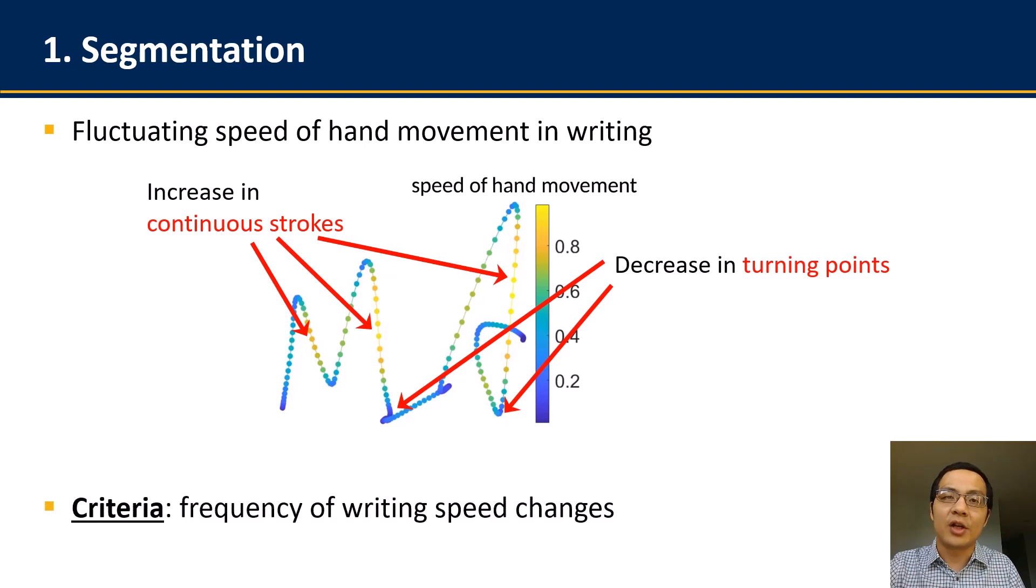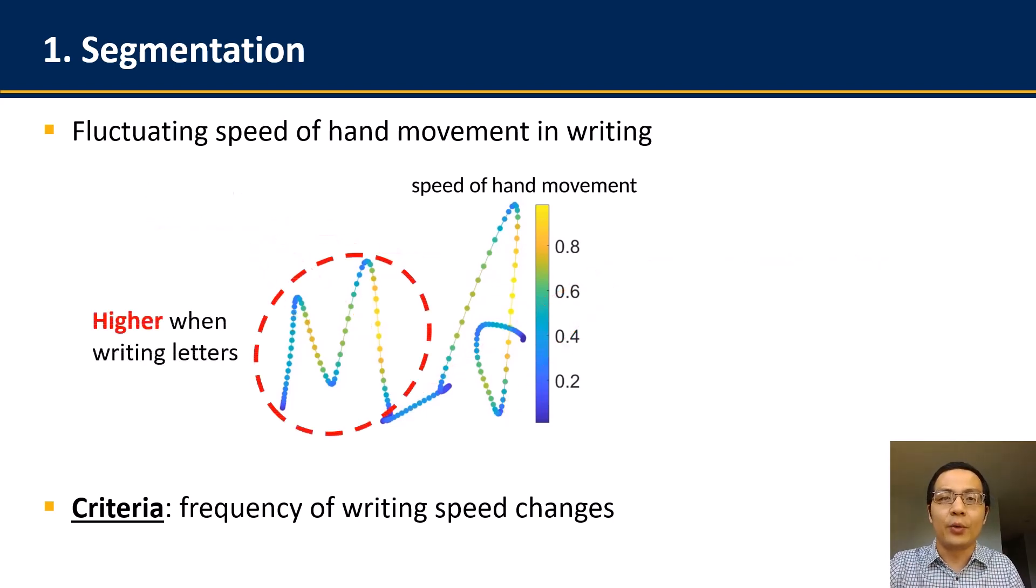Based on such characteristics, we use the frequency of writing speed changes as the criteria for segmentation. In English, writing each letter usually takes two to five strokes, and the writing will switch regularly between continuous strokes and turning points for several times. This frequency of change will hence be higher when you write letters, and will be much lower when you transit between letters and words, because the writing speed in transition will be nearly constant.